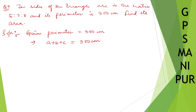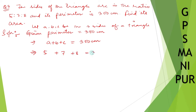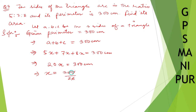Let a, b, c be the three sides of the triangle. The perimeter a plus b plus c equals 300 centimeters. We know the ratio is 5:7:8. We need one constant factor, so let us put 5x, 7x, 8x. Adding all: 5 plus 7 plus 8 gives 20x equals 300 centimeters, so x equals 15.